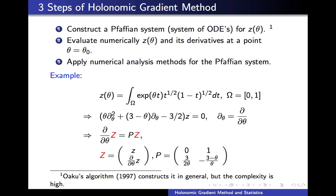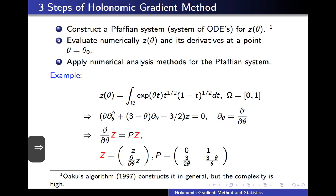In the case that the parameter space has one variable, the Pfaffian system is this first-order ordinary differential equation. Once we obtain this ordinary differential equation, numerical evaluation of the normalizing constant Z can be accomplished by the Runge-Kutta method in numerical analysis.